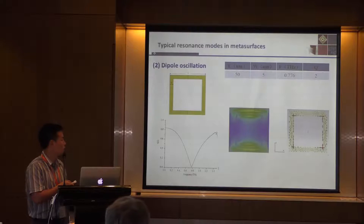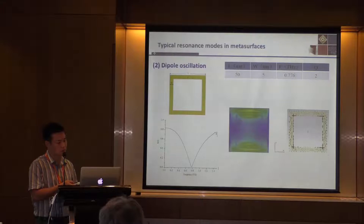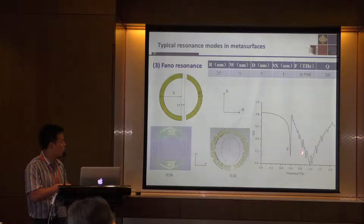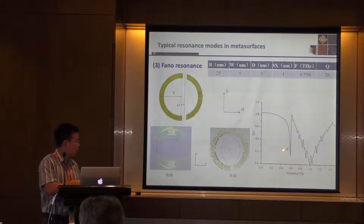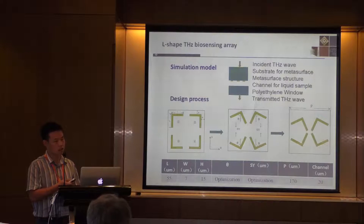The second one is the dipole oscillation. Also, the Q factor is very low, which means the curve is very broad, so it's not good for the sensor. The third one is the newly developed Fano resonance with the asymmetric structures. We can get a very high Q factor with a sharp curve for the probe. But it's not the main oscillation because there are other oscillations. So we should design another structure for the biosensing array.